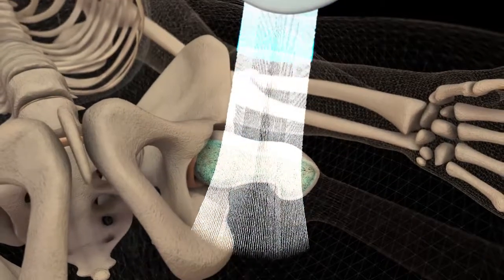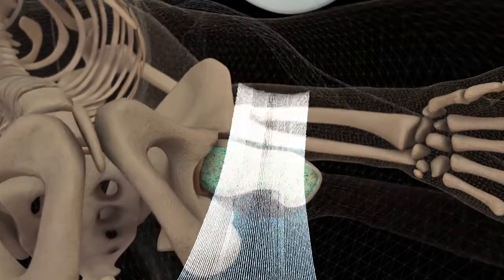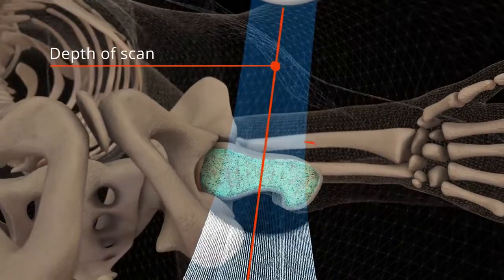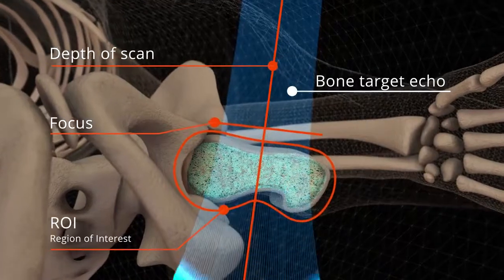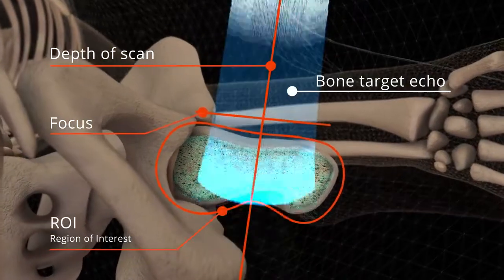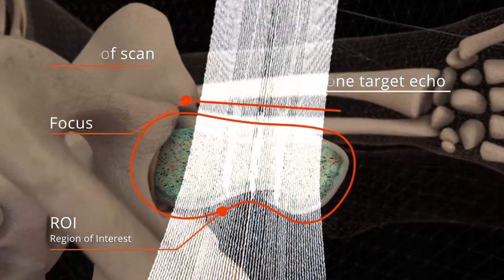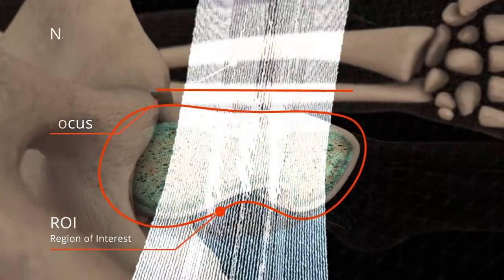During an ecographic scan, the operator sets focus and depth in order to visualize the bone targets in the middle of the ecographic field of view. The software automatically detects the bone interfaces and allows the identification of the region of interest.